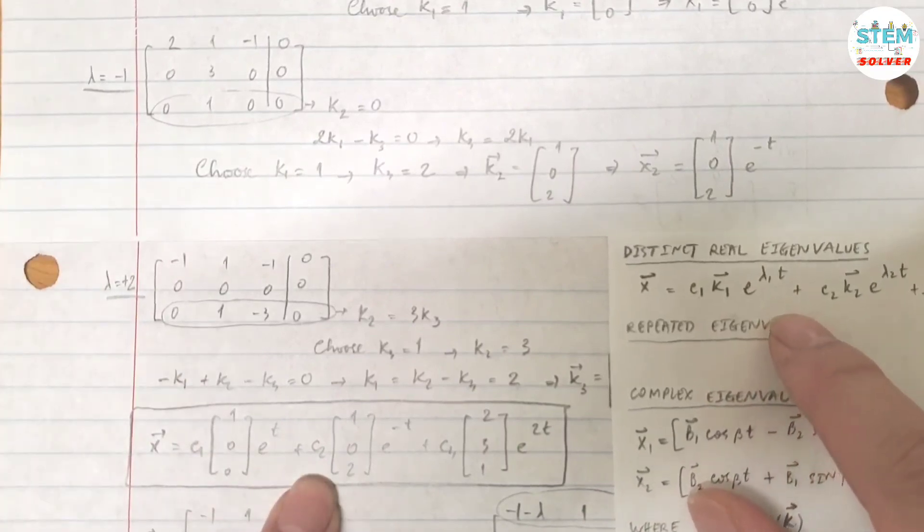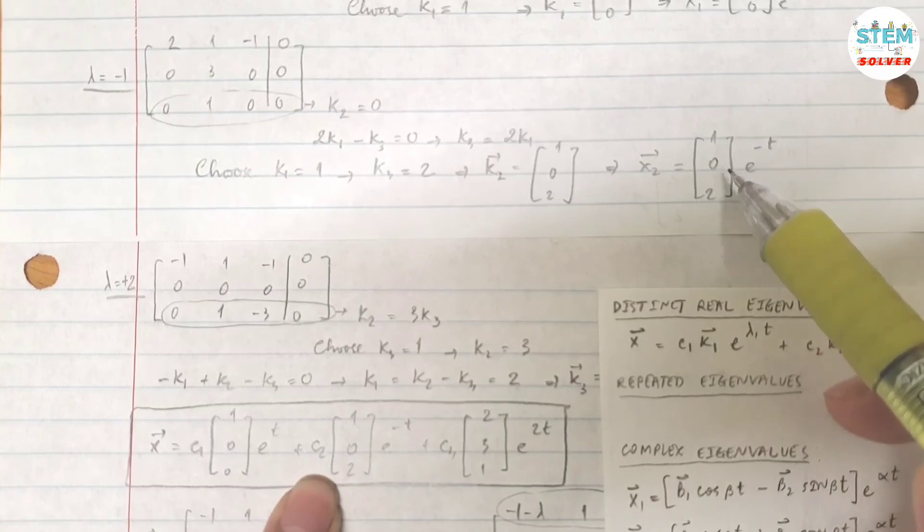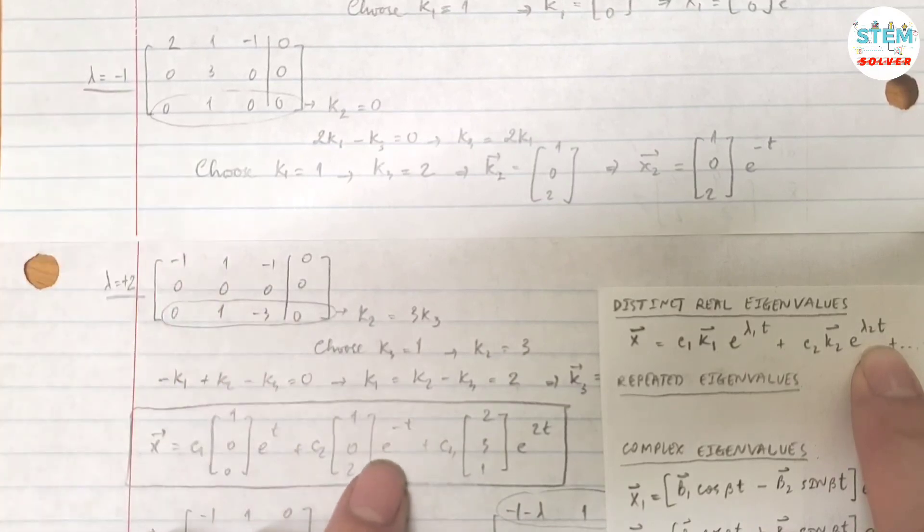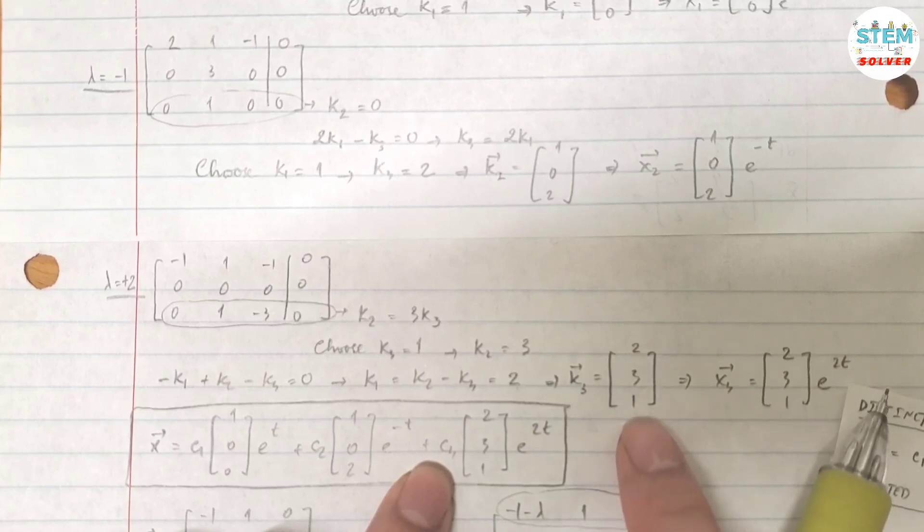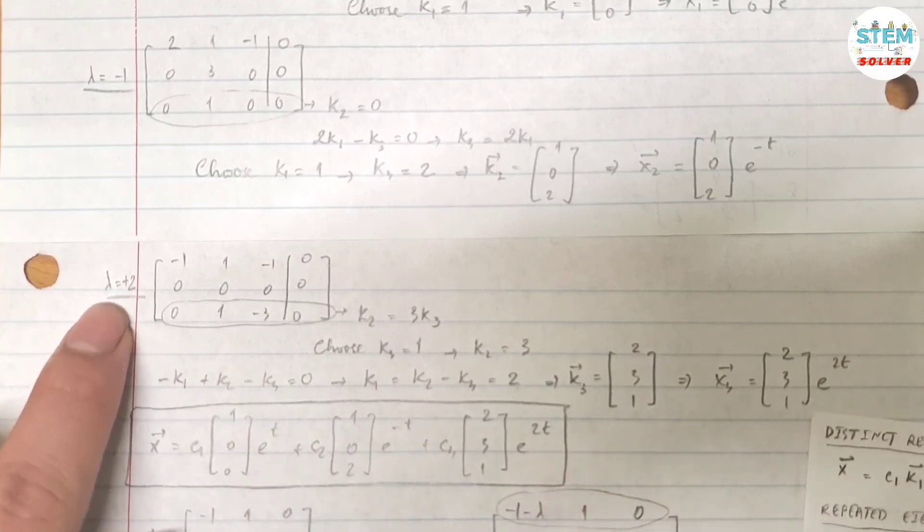Plus c2, k2 is 1, 0, 2, e to the lambda 2t. So lambda 2 is negative 1, that gives you e to the negative t. Plus c3, k3 which is 2, 3, 1, and then e to the 2t, because your lambda 3 is 2.